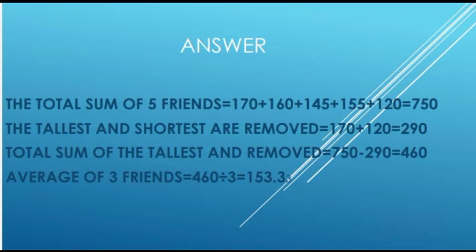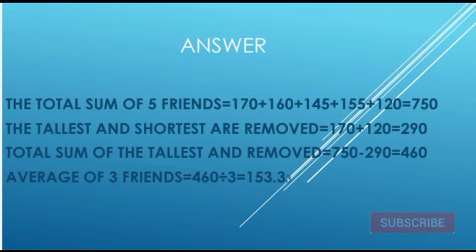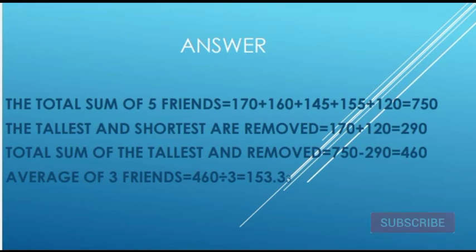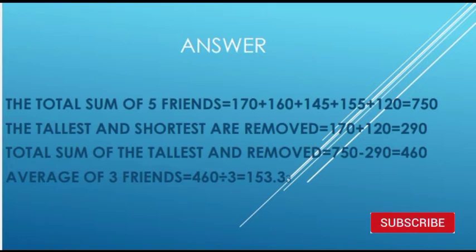For our students, 70 minus 50 gives 80. The tallest and shortest are removed. The average age is 30. If we remove from the total sum, we will have the total sum. The total sum is 290.